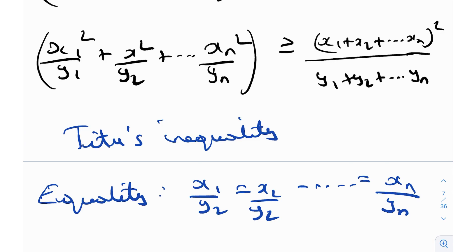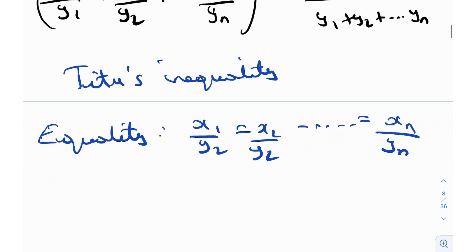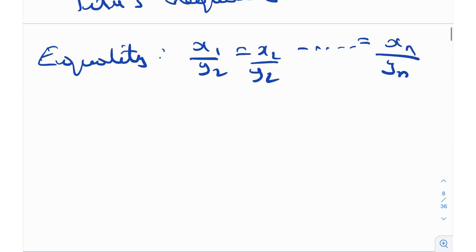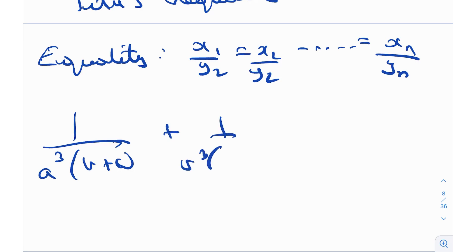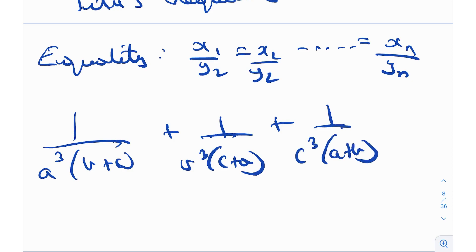Let's get back to our problem. We need to prove that 1/(a³(b+c)) + 1/(b³(c+a)) + 1/(c³(a+b)) is greater than or equal to 3/2, given the condition abc = 1.